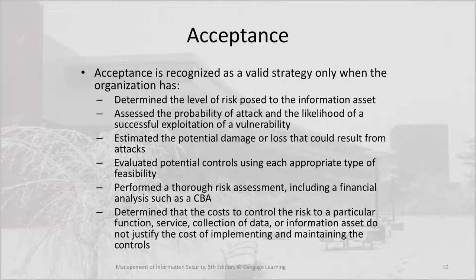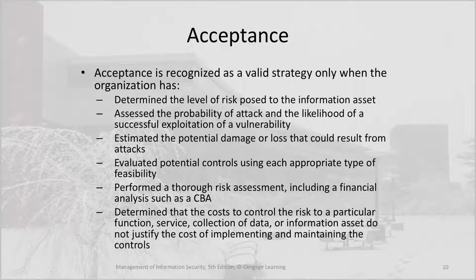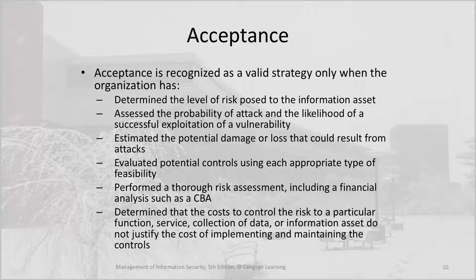Acceptance is recognized as a valid strategy only when the organization has determined the level of risk posed to the information asset, assessed the probability of attack and the likelihood of a successful exploitation of a vulnerability, estimated the potential damage or loss that could result from attacks, evaluated potential controls using each appropriate type of feasibility, performed a thorough risk assessment including a financial analysis such as a CBA, and determined that the cost to control the risk to a particular function, service, collection of data, or information asset does not justify the cost of implementing and maintaining the controls.